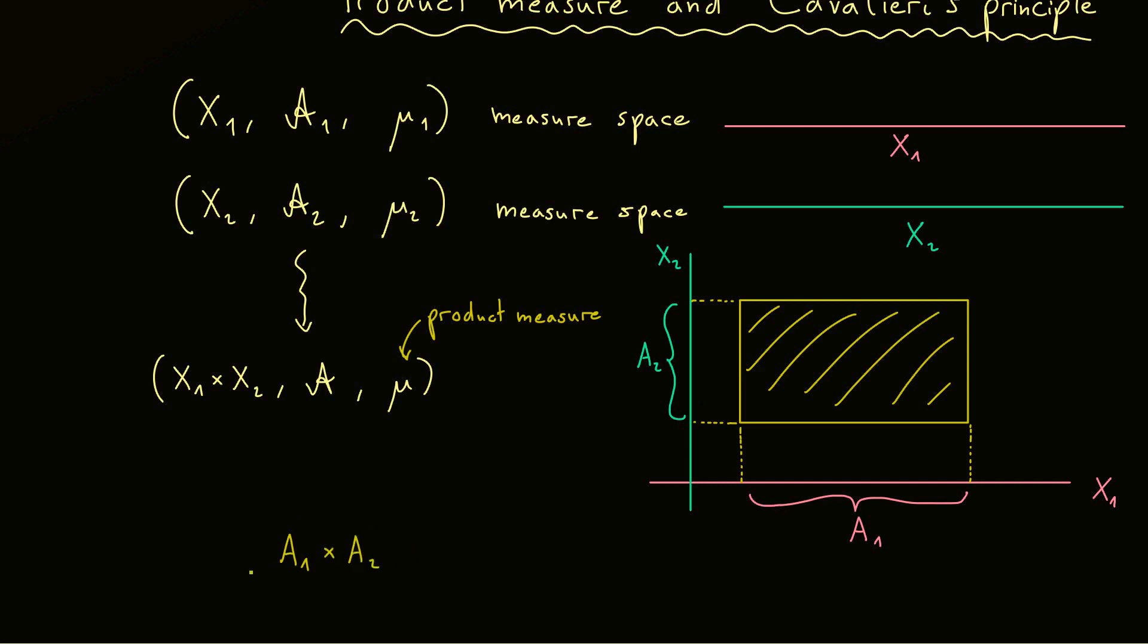And from this thing we want to know the volume. However if you now look back to the picture you know that the length of the rectangle should be exactly the measure of this set A1. And the same way the width of the rectangle should be the measure of A2. And now you can say that a meaningful product measure should measure a rectangle just by length times width. This means for our formula here that the measure of A1 times A2 is exactly the measure of A1 times the measure of A2.